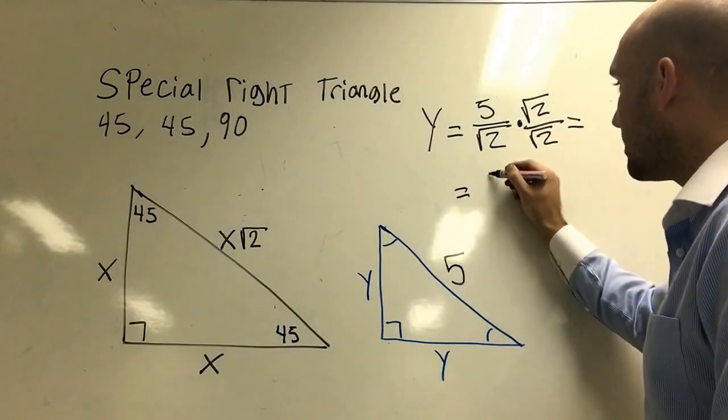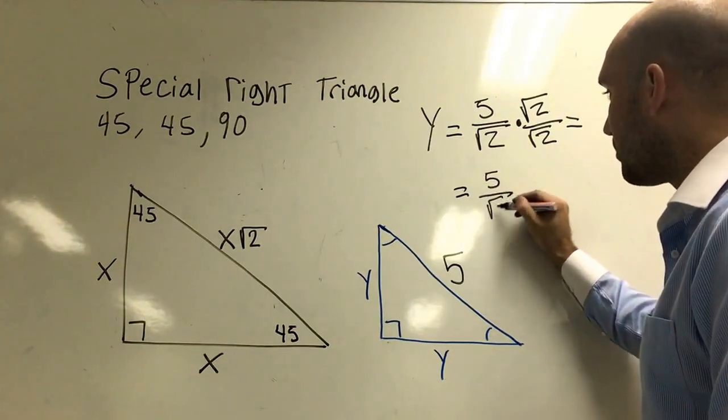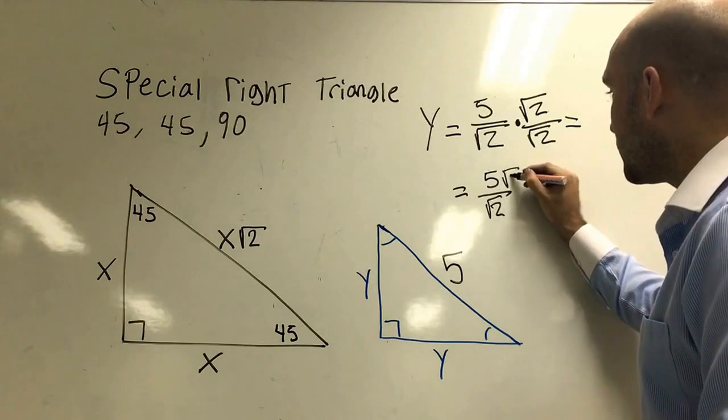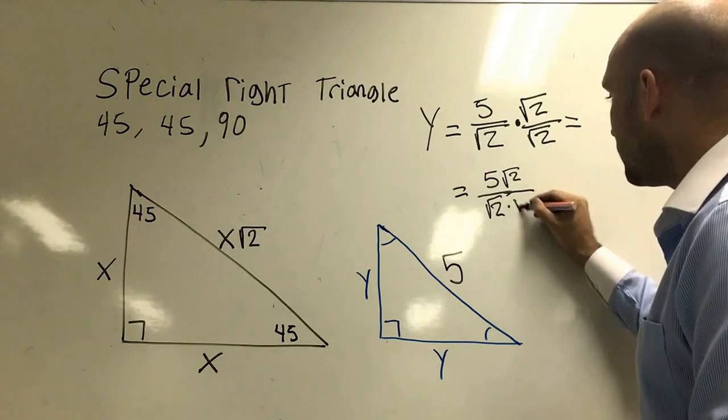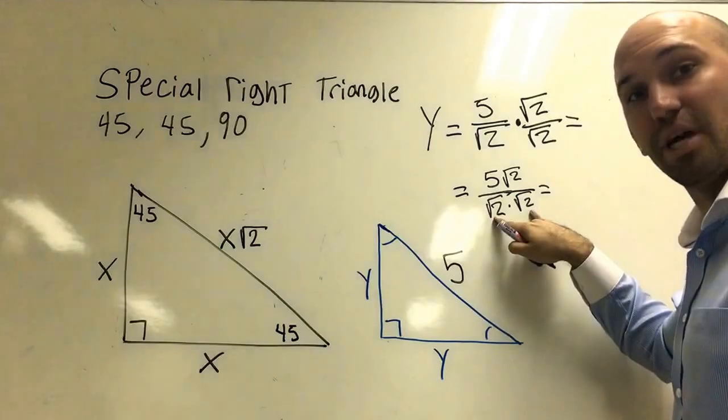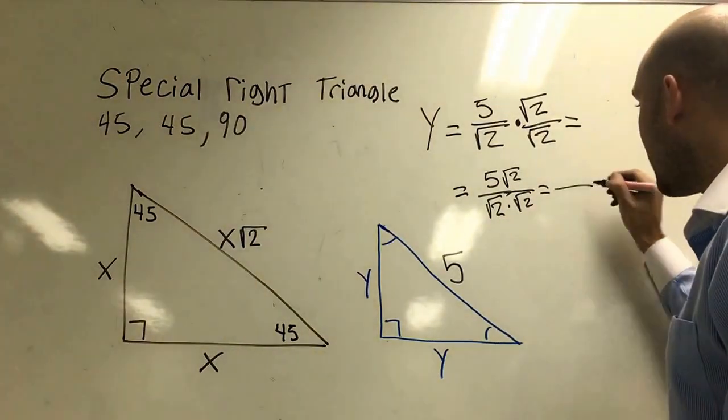I'll actually do it down here. This is going to be 5 square root 2 times square root 2 times square root 2. And we know that square root 2 times square root 2 is going to be, anybody?